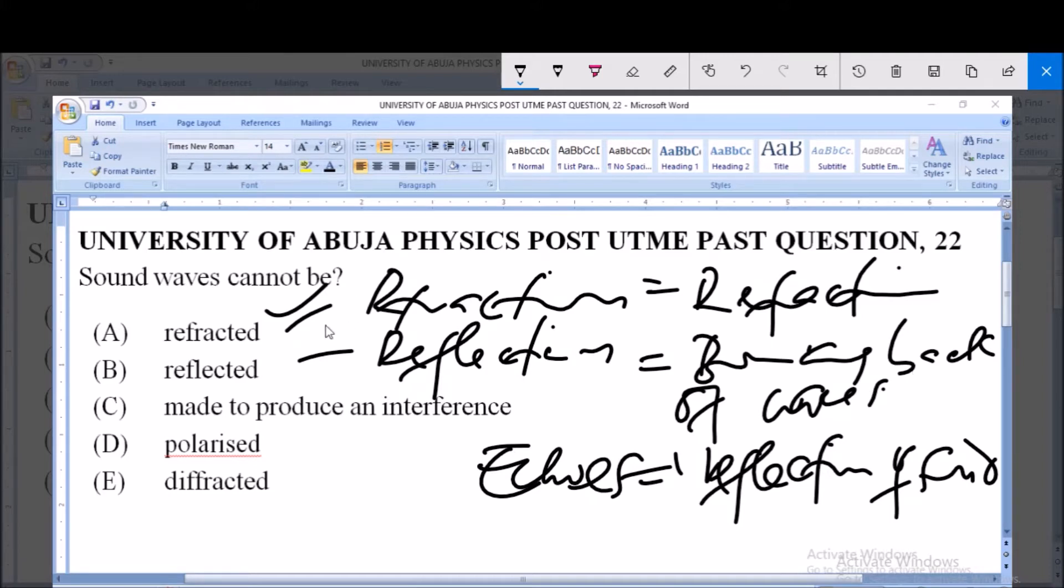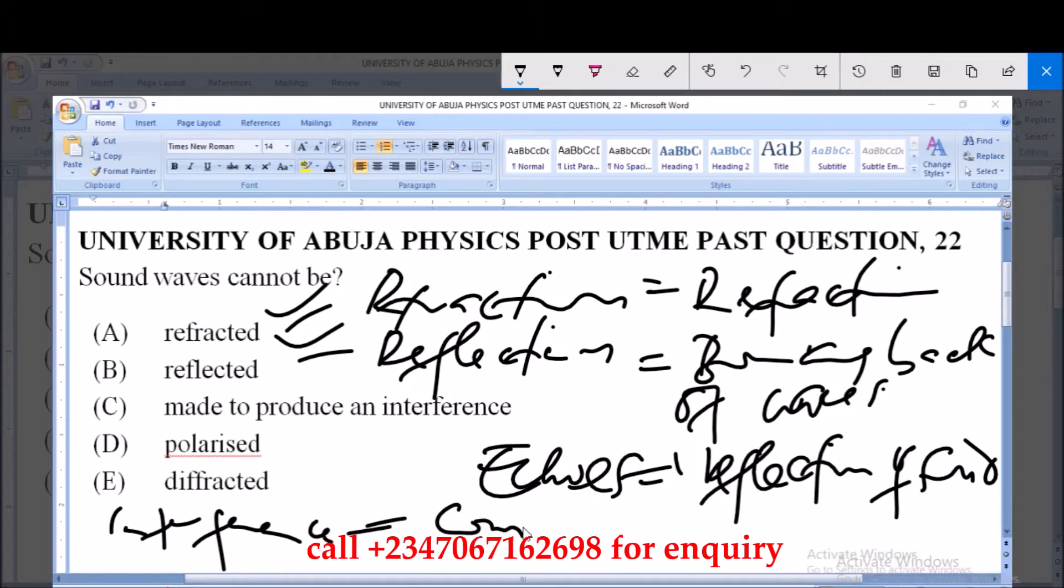Now C, made to produce an interference. Interference is simply the attribute of a wave to combine or coincide. When two or more people are shouting, the resultant sound becomes higher. The intensity of the sound becomes higher than when it is just one person. So interference is actually a property that can be exhibited by a sound wave.